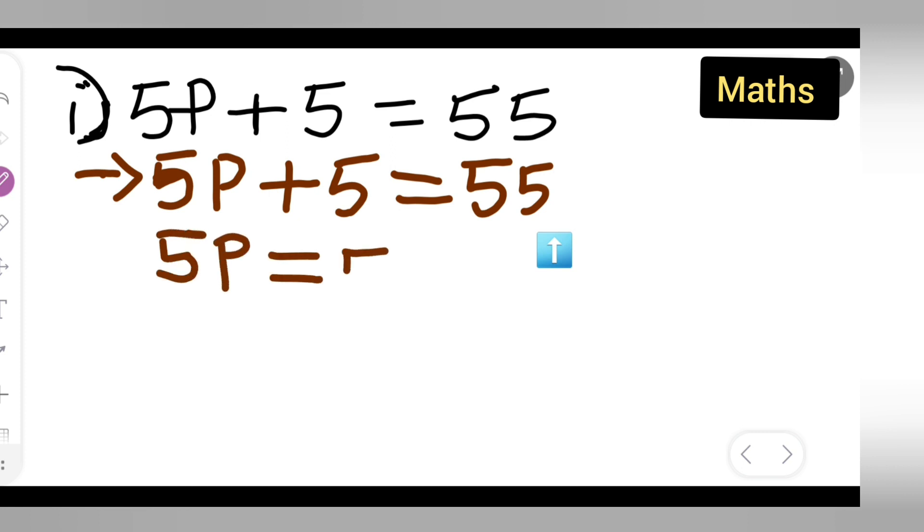5p equals 55 minus 5. Why have I taken the 5 to the other side? Because I have kept the constant on the other side. So this plus 5, when it goes to the other side, the sign will change. Plus 5 will turn into minus 5.